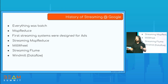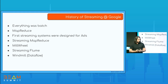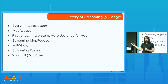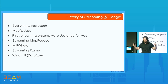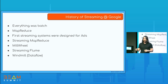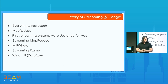MillWheel was used by many projects inside Google. One fun example: there was a project tracking anomalies in search queries that detected the death of Michael Jackson seven minutes before the actual reported death, because they detected an anomaly in search queries. Meanwhile, Google had the Flume project — something like MapReduce but easier to build, with nicer APIs and an automatically constructed graph. So they merged the two: something low-level and streaming with something easy to use — and created Streaming Flume, which is still used today.